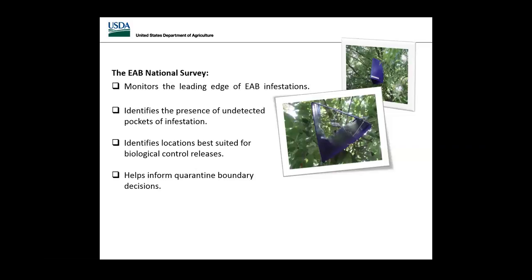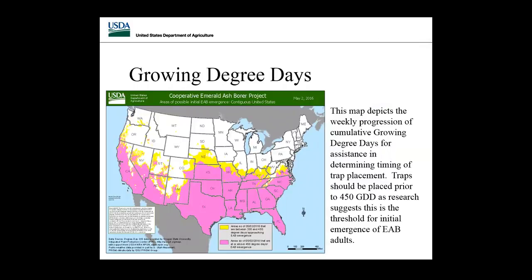Going into our 2017 season, we will be contracting out the entire survey again. We also produce a map every week throughout the survey season showing 450 growing degree days — the point where adult EAB emerge. This map provides our trapping partners a planning tool so they know when temperatures are reaching the right point in their area and can time their trap placement accordingly.